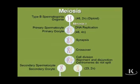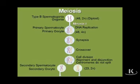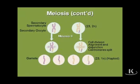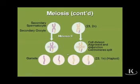Meiosis, as you recall, is a two-cell division process. On this slide, we see the first cell division in which a cell has gone through a division producing two cells, and then we see that those two cells each go through a second division to produce four cells. So let's discuss this two-cell division process, but we need to discuss it a few times.